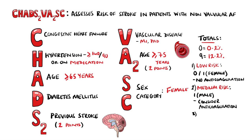A score of 2 or higher indicates a high risk for stroke, and therefore an anticoagulant is recommended, such as either warfarin or one of the direct oral anticoagulant agents, such as apixaban, rivaroxaban, dabigatran, or edoxaban.